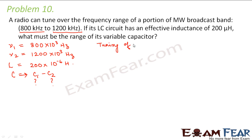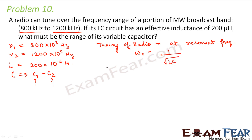Tuning of the radio occurs at resonant frequencies. When you turn the knob, the variable capacitor changes its value so that at the resonant frequency the amplitude becomes maximum and you can hear that particular station. The resonant frequency is given by nu0 equals 1 divided by 2 pi times root over LC.